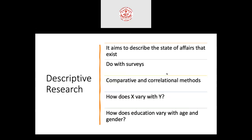Then there is descriptive research. Academic research is more focused on descriptive research. It aims to describe the state of affairs that exist — examining an already existing phenomenon. The majority of descriptive research is done with surveys, and comparative and correlational methods are used in analytics to find insights.